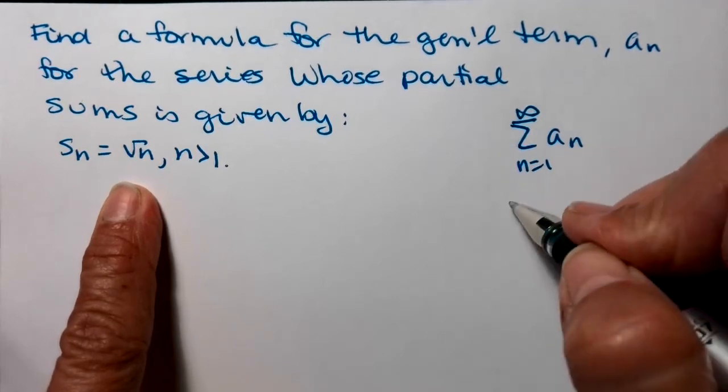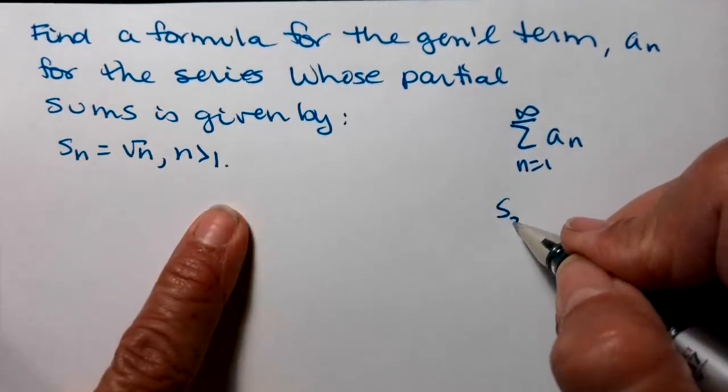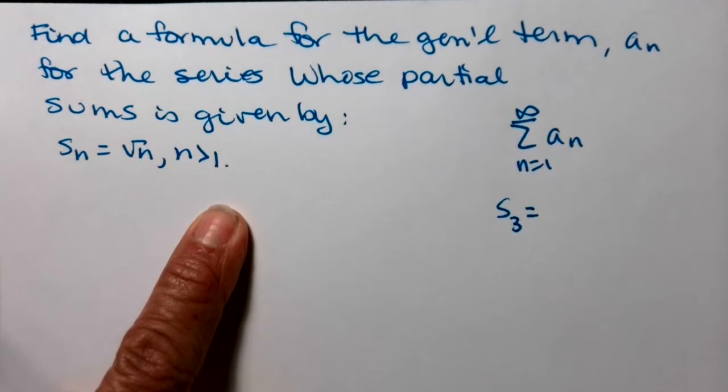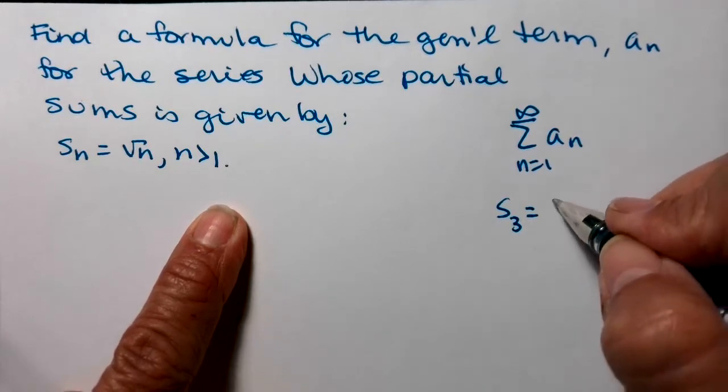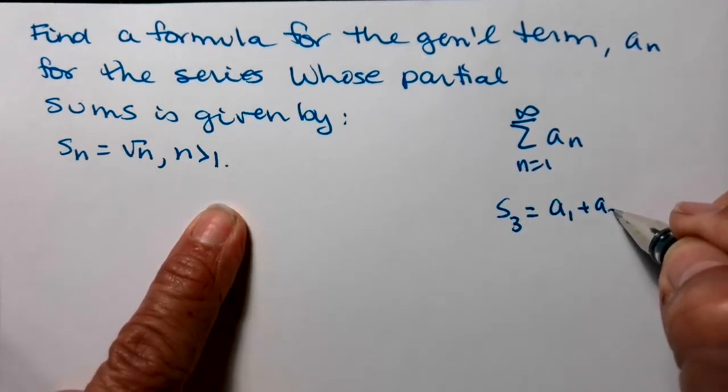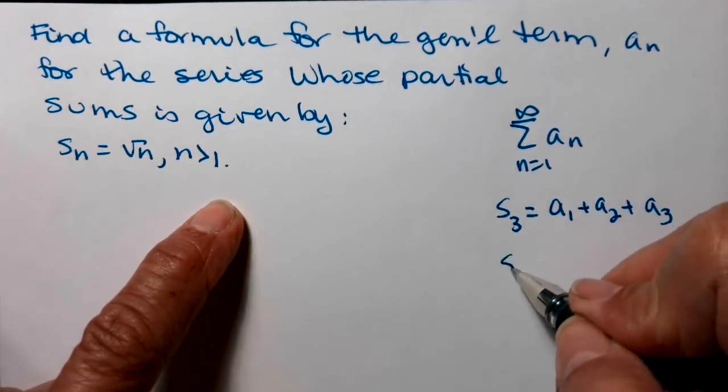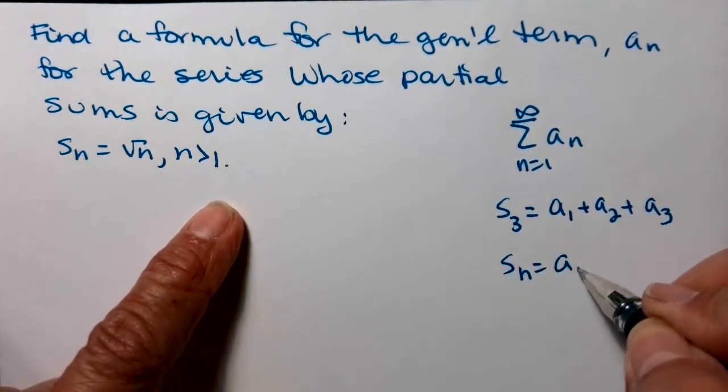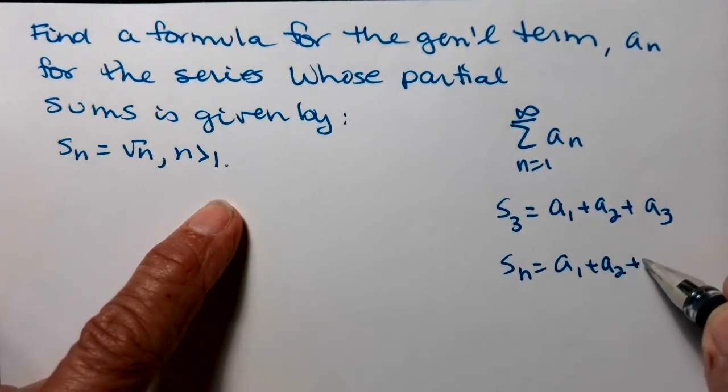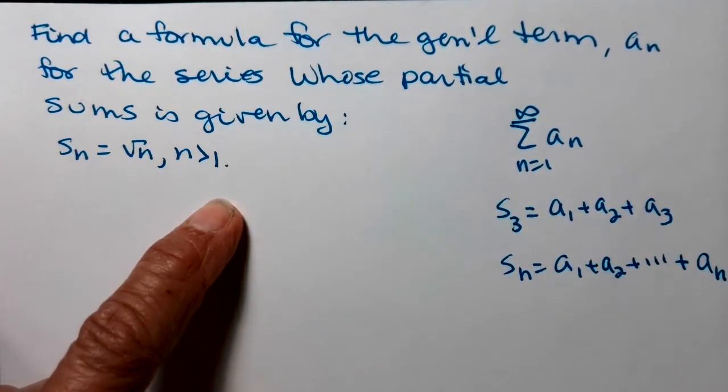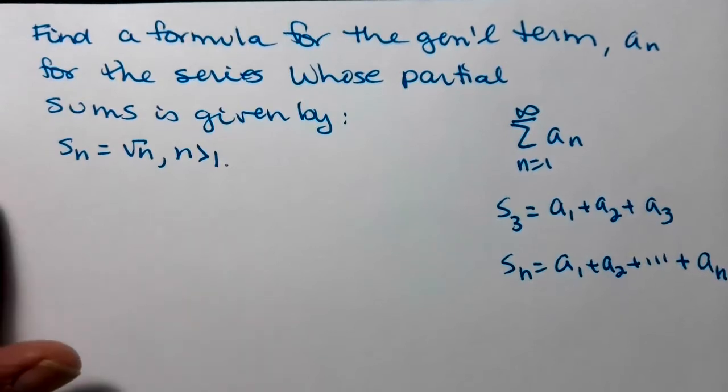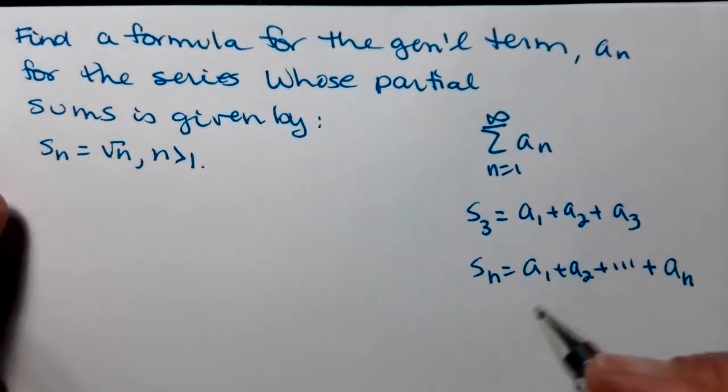So remember, for instance, if I were to talk about s sub 3, the third partial sum, that would be a sub 1 plus a sub 2 plus a sub 3. S sub n is a sub 1 plus a sub 2 plus, I don't know how many terms because I don't know what n is, and then we add that nth term, and that's the nth partial sum.